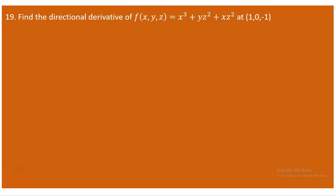We are now on question 19, where we are asked to find the directional derivative of a given function at a particular point in the direction of the vector 2i minus j plus 2k. A point is also given, so the question is to find the directional derivative of the given function in the direction of this given vector. This is obtained by first finding the gradient.